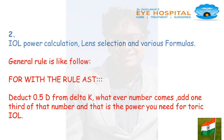The general rule is as follows. For with-the-rule astigmatism, deduct half a diopter from delta K; whatever number comes, add one third to that number, and that is the power you need for the toric IOL.